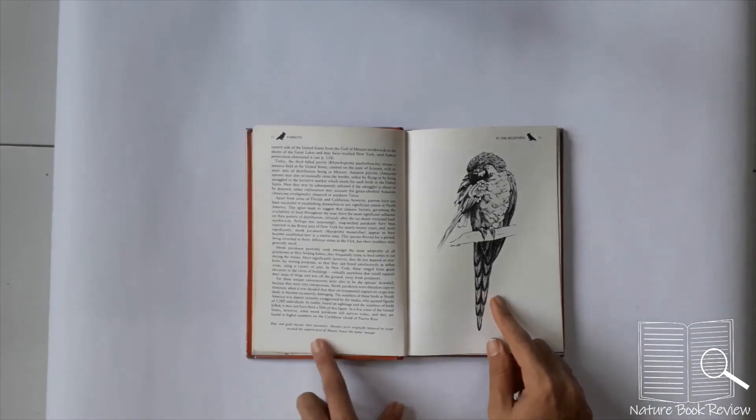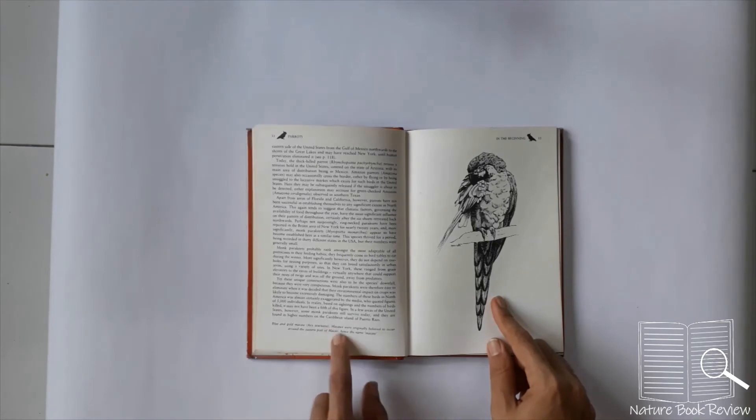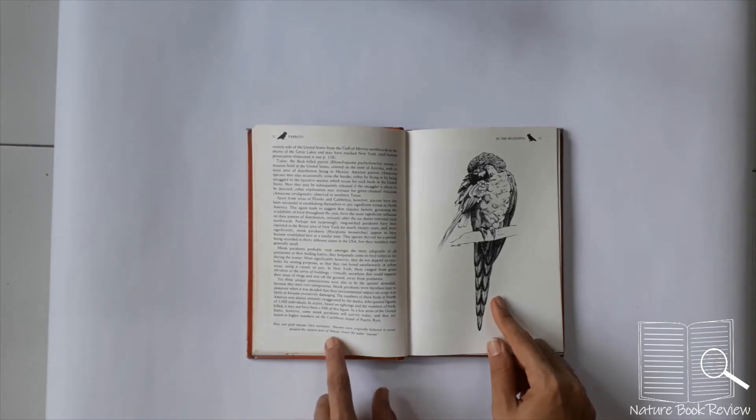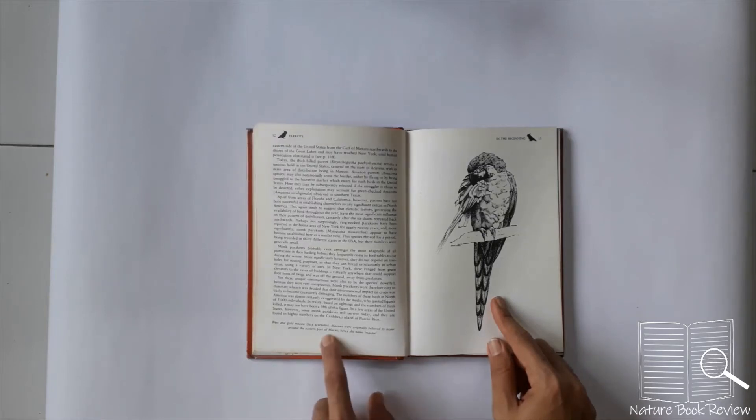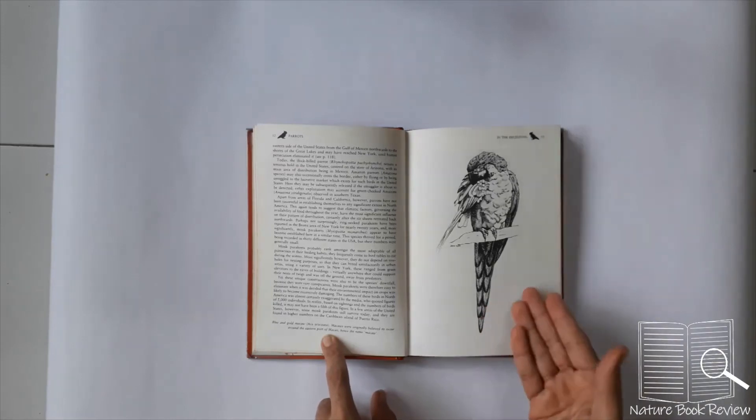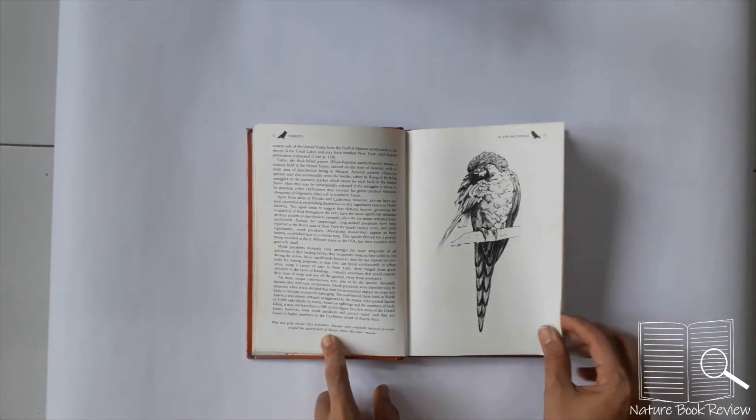So let's see what it says here. Blue and gold macaw. Macaws were originally believed to occur around the eastern port of Macau, hence the name macaw. Interesting. Macau is in China, but they are found in the other part of the world, in the Amazon basin.